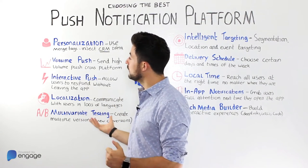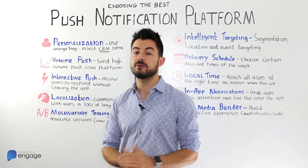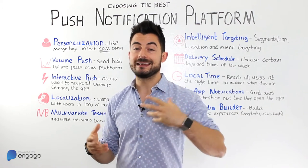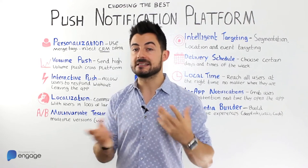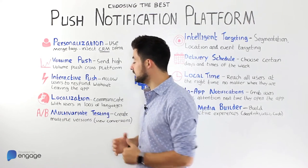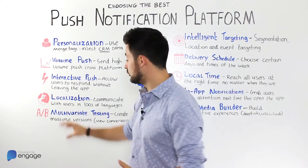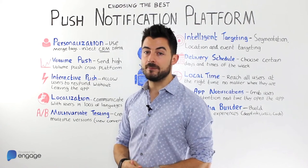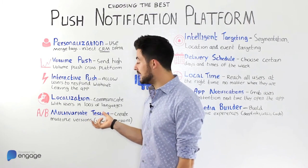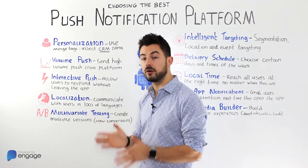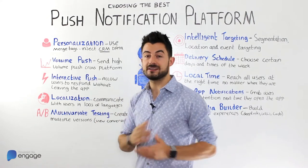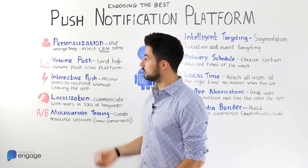Multivariate testing is a big component of this, so make sure your provider allows you to send not only one version but at least an A/B split test for push notifications, or even better, full multivariate testing where you can do as many as ten different versions of the push. Bonus points if the system can automatically elect a winner based on a small cohort, and then send that winning version to around 80% of the target group.